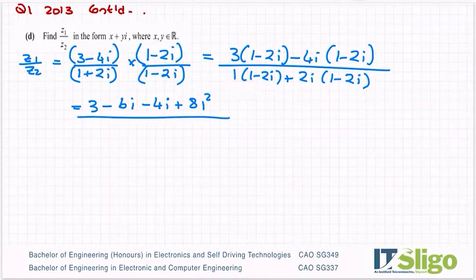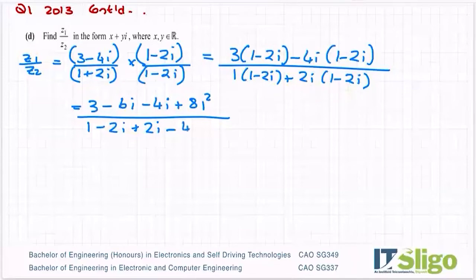1 by 1 is 1. 1 by minus 2i is minus 2i. Plus 2i by 1 is plus 2i. And I know I'm happy when I see that - that's the whole reason I do this. And then I've plus 2i by minus 2i. So let's do the sign first. Plus by minus is a minus. 2 times 2 is 4, i by i is i squared.